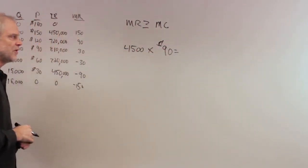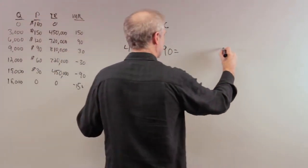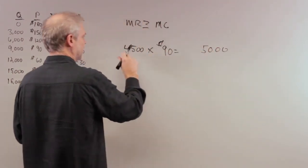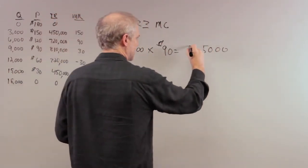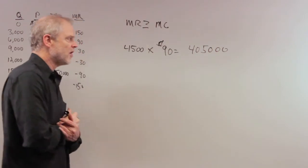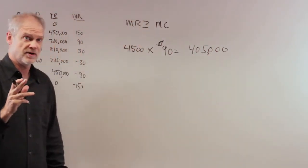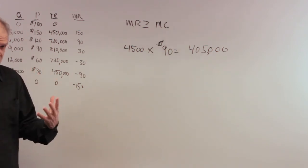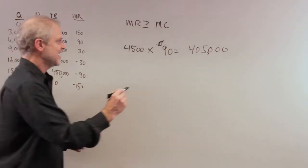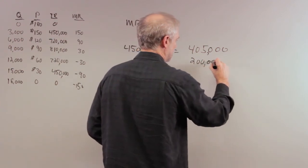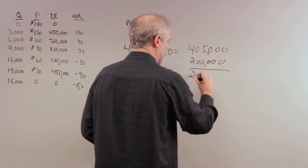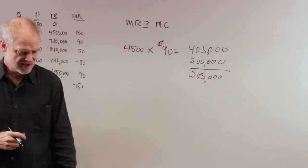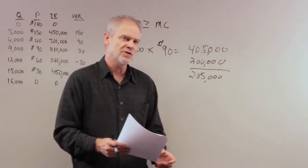This is their total revenue. Each firm has $405,000 in total revenue. However, there's a fixed cost of $200,000 that each firm must pay to be the cable provider. Therefore, their profit will each be $205,000, which is answer D on your answer sheet.